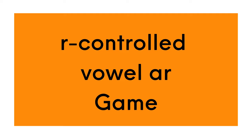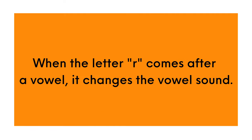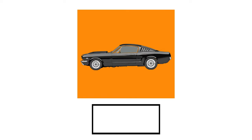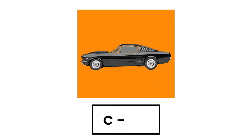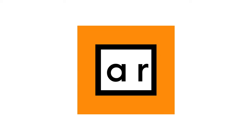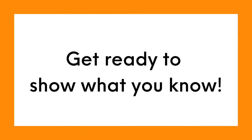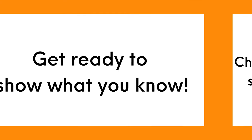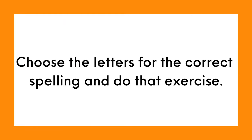It's time to play an R-controlled vowel AR game. When the letter R comes after a vowel, it changes the vowel sound. We don't say kuh-ah-er; instead we say kuh-ar — car. Remember, AR makes the R sound. Get ready to show what you know. Choose the letters for the correct spelling and do that exercise.